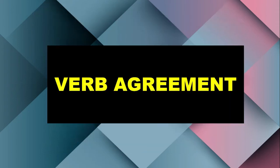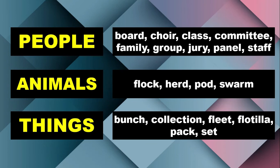Let's proceed to verb agreement. For people, we may use: board, choir, class, committee, family, group, jury, panel, and staff. Those are collective nouns used to describe a group of people. For animals, you may use: flutterby, flock, herd, pod, swarm, and school. Fishes can be named a school of fish or a shoal of fish. If they are swimming together in harmony, that's a school of fish. But if they are swimming in different directions, that's a shoal of fish.